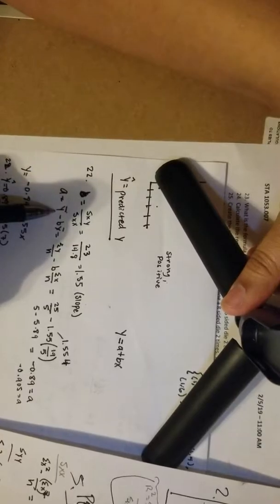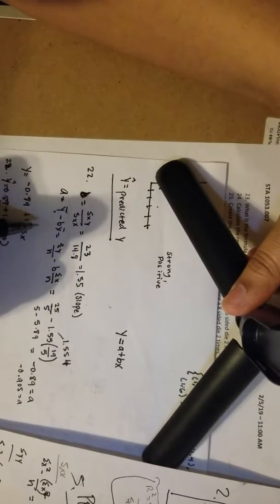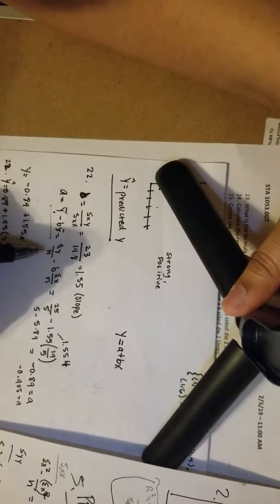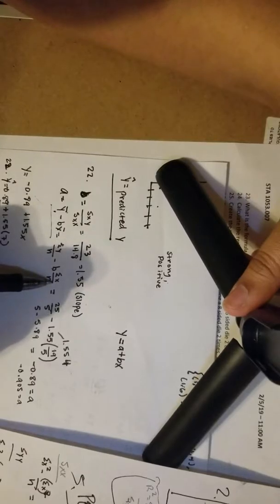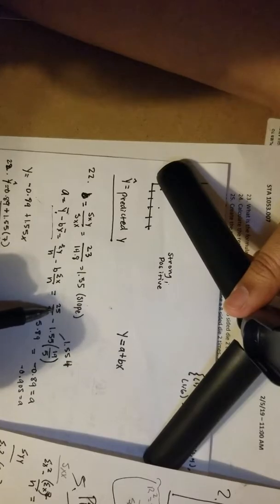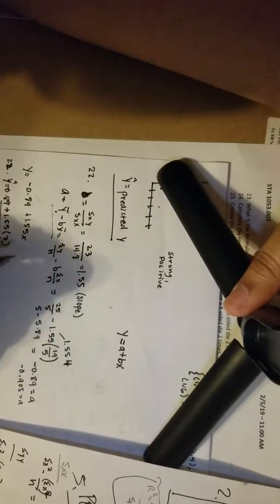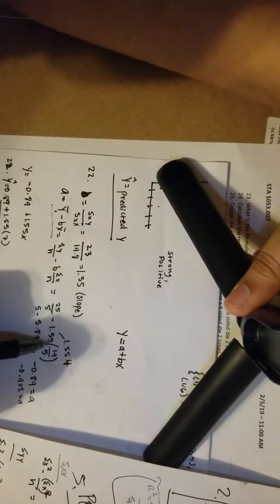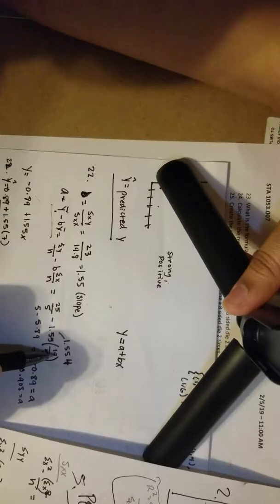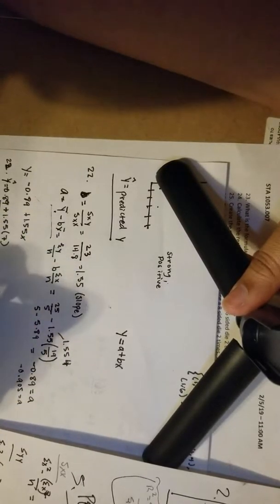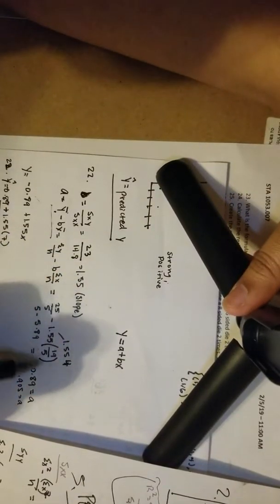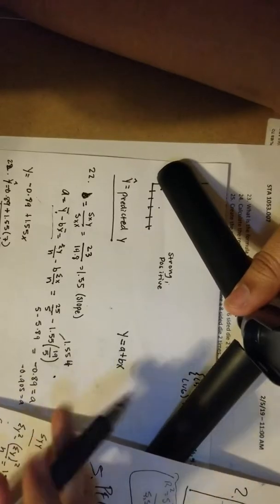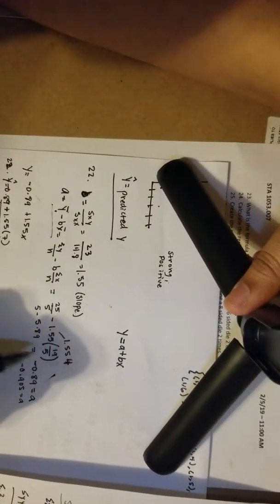Next, a. All we have to do is take the y bar, which is the mean of y, and subtract it by b times the mean of x. Simplified, we just take the sum of y divided by n minus b times the sum of x divided by n. So that is 25, because the sum of y we calculated early to be 25, divided by n—n is 5—minus 1.55 times 19, which is the sum of x divided by 5. Hopefully you will see where all those numbers are coming from by this point.